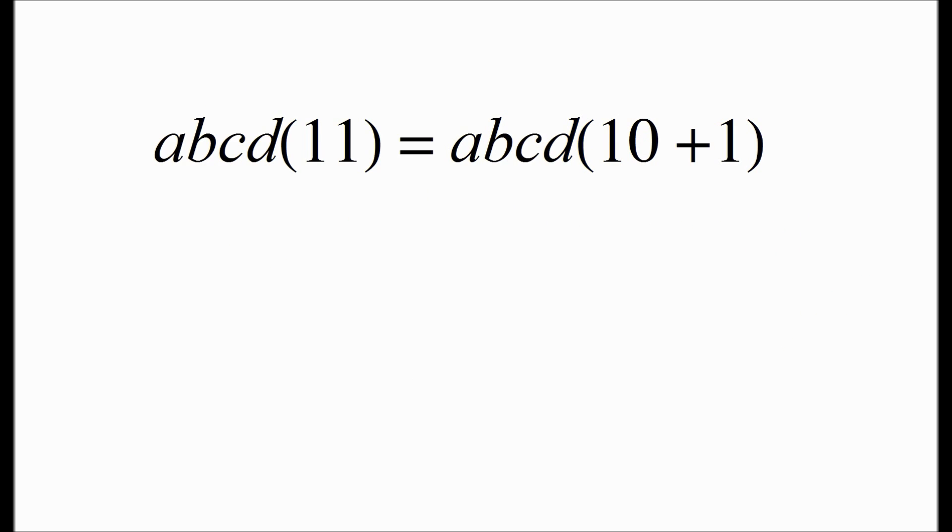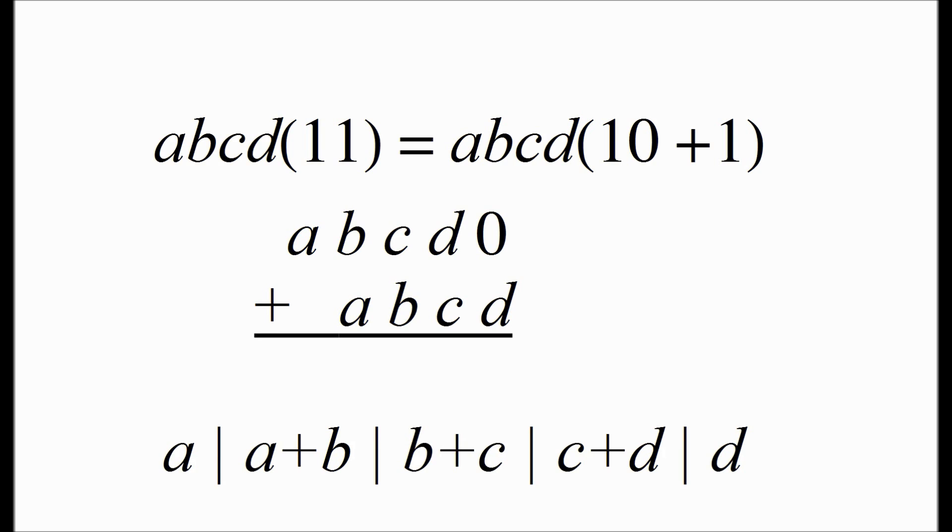Here's a short proof of why the trick works. When we multiply a number by 11, that's the same thing as multiplying it by 10 plus 1. We can write this in another way as a, b, c, d, 0 plus a, b, c, d. Now it's very easy to see if we add up column by column that the result is a, a plus b, b plus c, c plus d, and d. Which is exactly the trick we've been using.